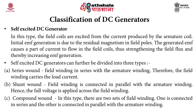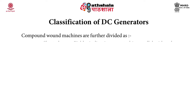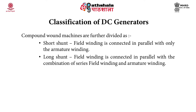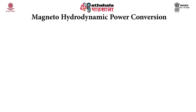In series wound, the field winding is in series with the armature winding, so it carries the load current. In shunt wound, the field winding is connected in parallel with the armature winding, so full voltage is applied across the field winding. In compound wound type, there are two sets of field winding — one connected in series and the other in parallel with the armature winding. Compound wound machines are further divided into short shunt, where the field winding is in parallel with only the armature winding, and long shunt, where the field winding is in parallel with the combination of the series winding.